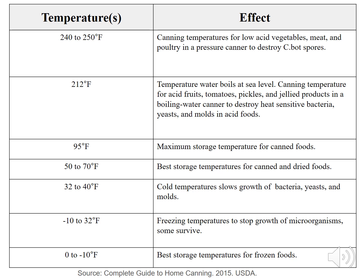95 degrees Fahrenheit is the maximum storage temperature for home and commercially canned food. The best storage temperature for canned food is 50 to 70 degrees Fahrenheit. 32 to 40 degrees Fahrenheit are refrigeration temperatures to slow the growth of bacteria, yeast, and mold. Negative 10 to 32 degrees Fahrenheit are freezing temperatures to stop the growth of microorganisms, but some survive and can grow again once the food is back in the temperature danger zone.